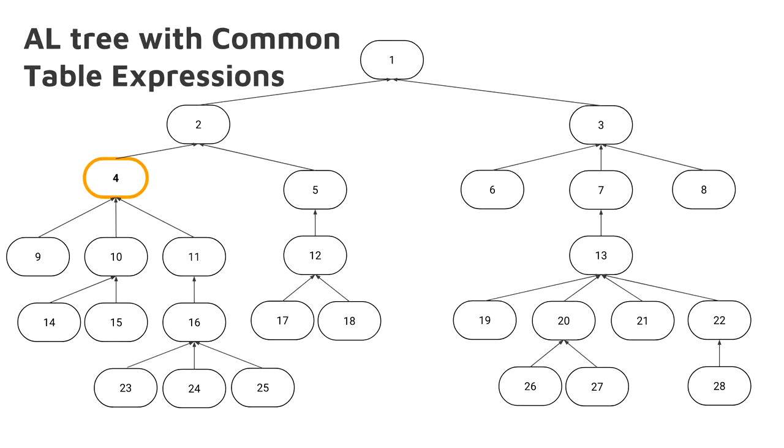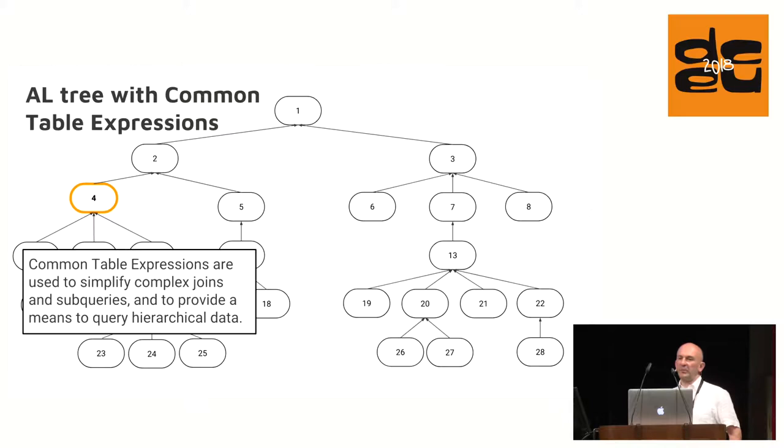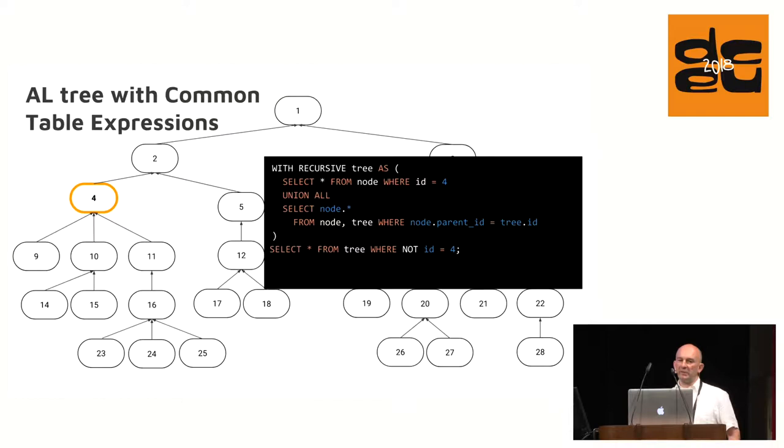Solution 4. Common table expressions have been introduced into the ANSI SQL 99 standard and are now supported by all major database systems. In MySQL since version 8, in MariaDB since version 10.2.2, in SQLite since 3.8.3, and in Postgres since 8.4. Common table expressions are used to simplify complex joins and subqueries and to provide a means to query hierarchical data.